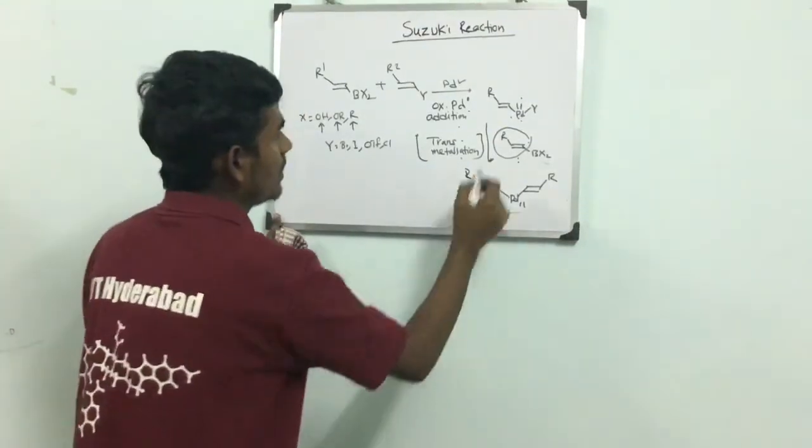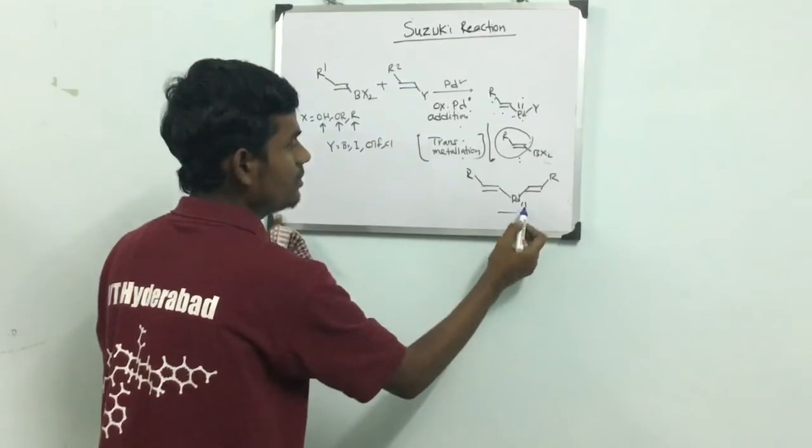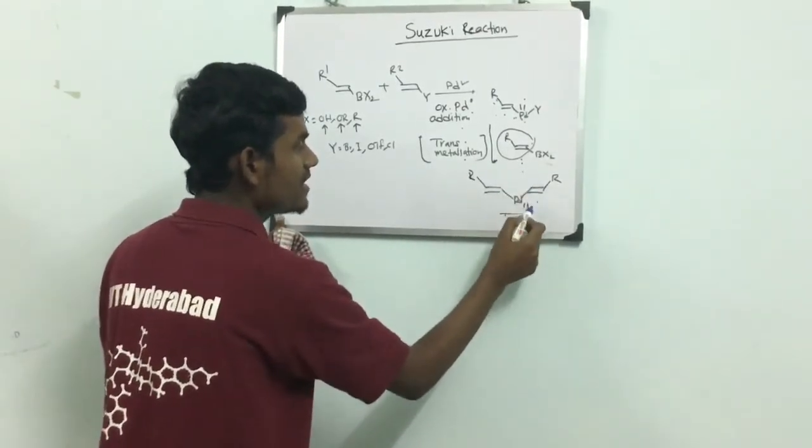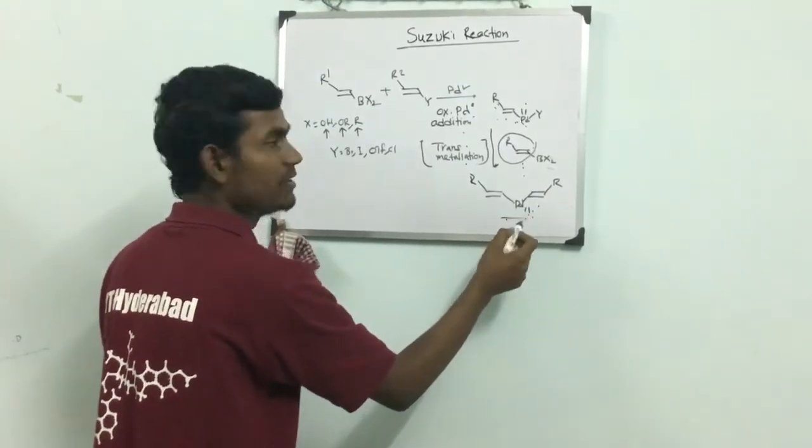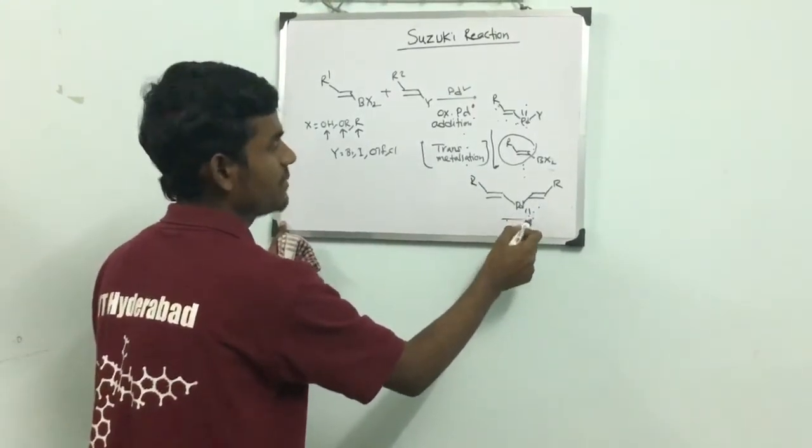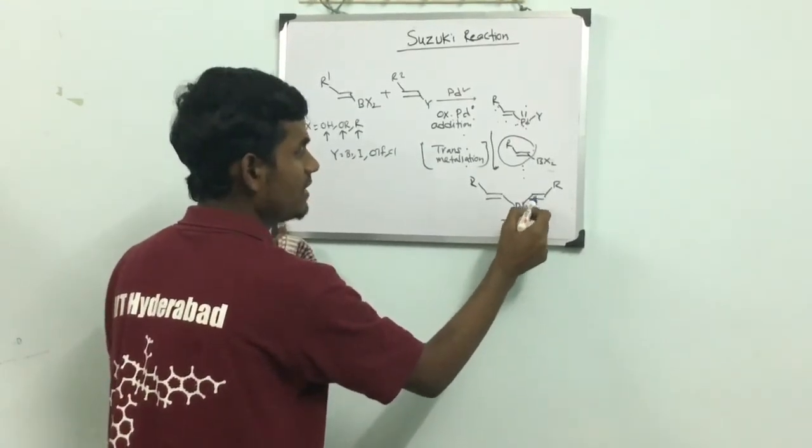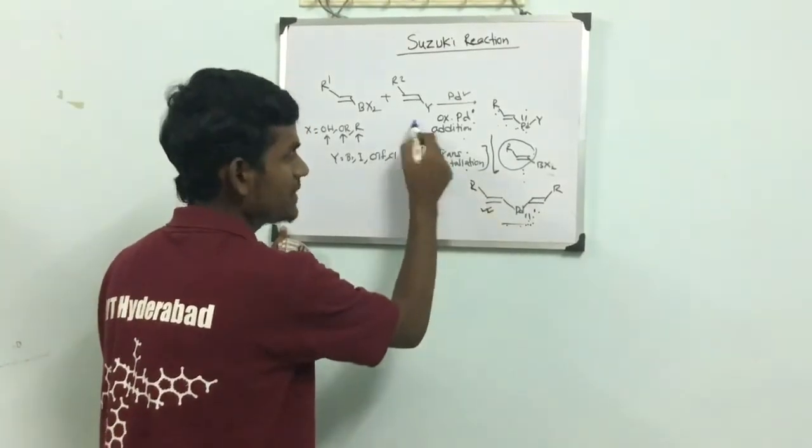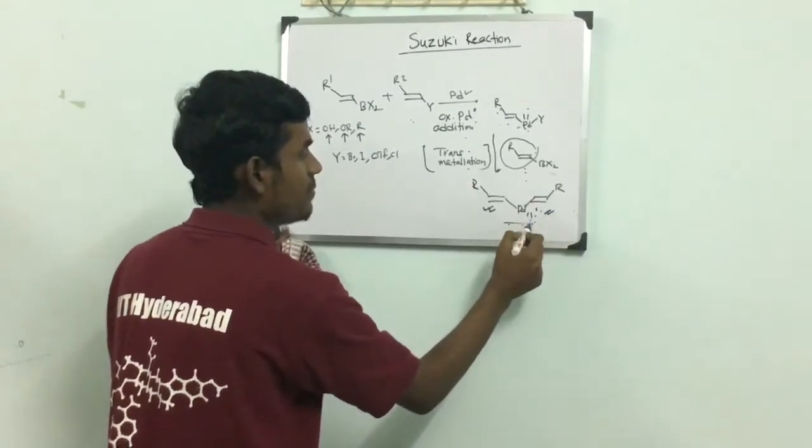See, here the double bond is trans. Here also the double bond is trans. It is very crucial. That is, retention of configuration is observed. Keep it in mind, you will see later in the examples. It is very crucial - retention of the double bond of both species, the alkenyl halide species as well as the boron species. This is the important step.